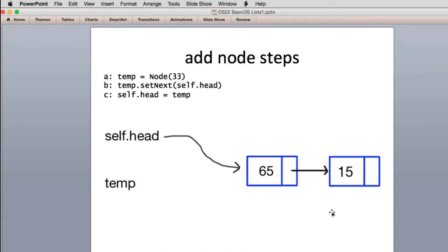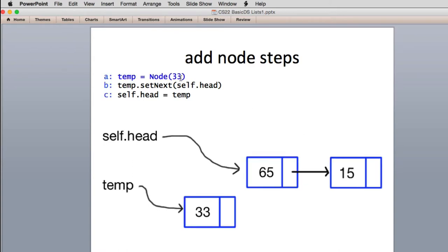So here's the steps now to add something else. So we're adding node 33 to a list that already exists, so things are a little different. So we get temp, we do the same three steps. So we're going to step through them. So the first step, it makes a new node. So temp points to the new node.